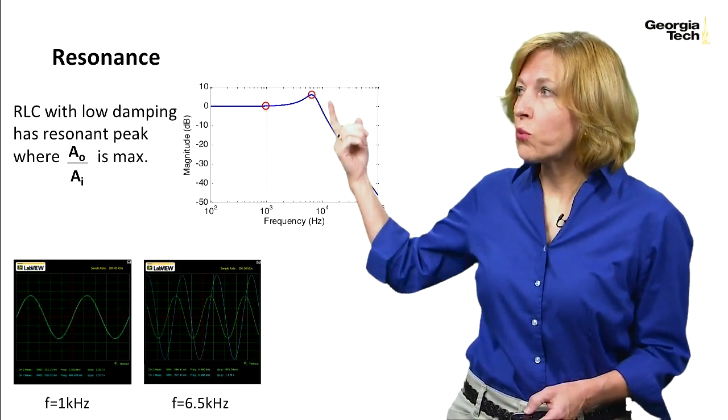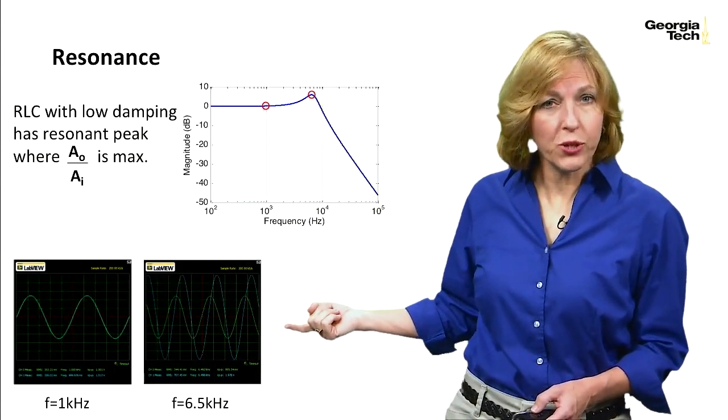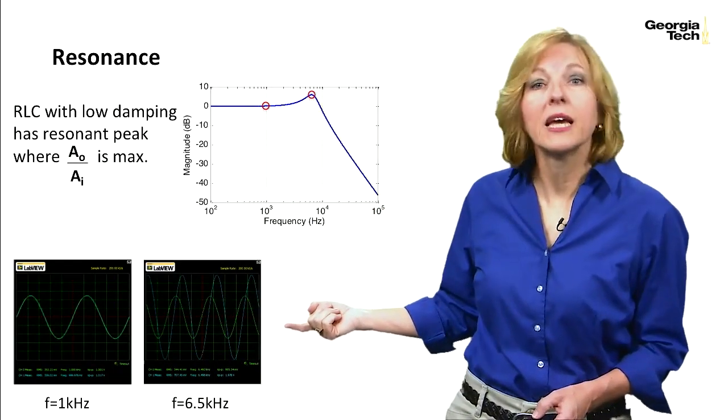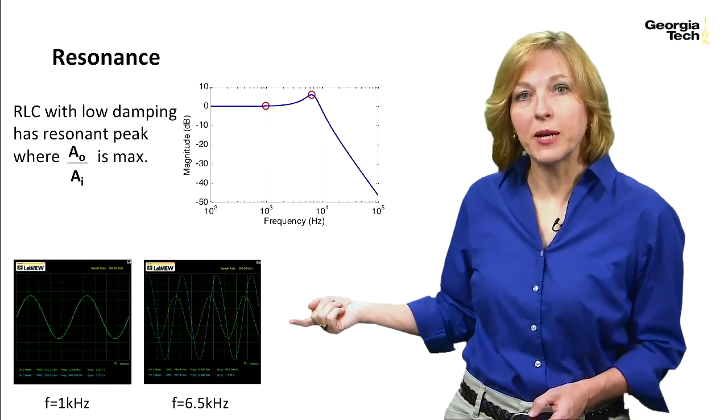And then at resonance is where we have the ratio is at its maximum, so the output amplitude is the largest with respect to the input amplitude.